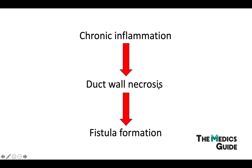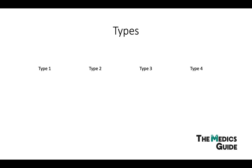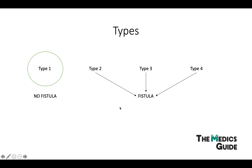Because of chronic inflammation, it can eventually lead to duct wall necrosis, which can then form fistulas. Fistulas are essentially openings from the gallbladder into the common bile duct. Based on that, we can categorize Mirizzi's syndrome into four types. Type one involves no fistula at all. Types two, three, and four involve fistulas, and the difference is essentially how big the fistula is: smaller than 33% of the common hepatic duct diameter is type two; between 33% and 66% is type three; and larger than 66% is type four.